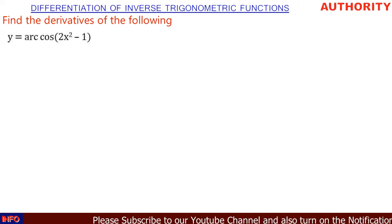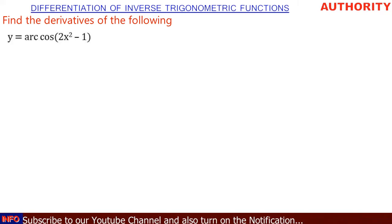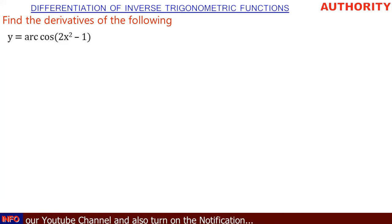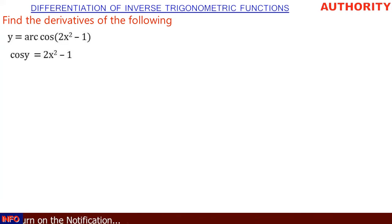Find the derivative of y = arccos(2x² - 1). So here, cos y is equal to 2x² - 1.